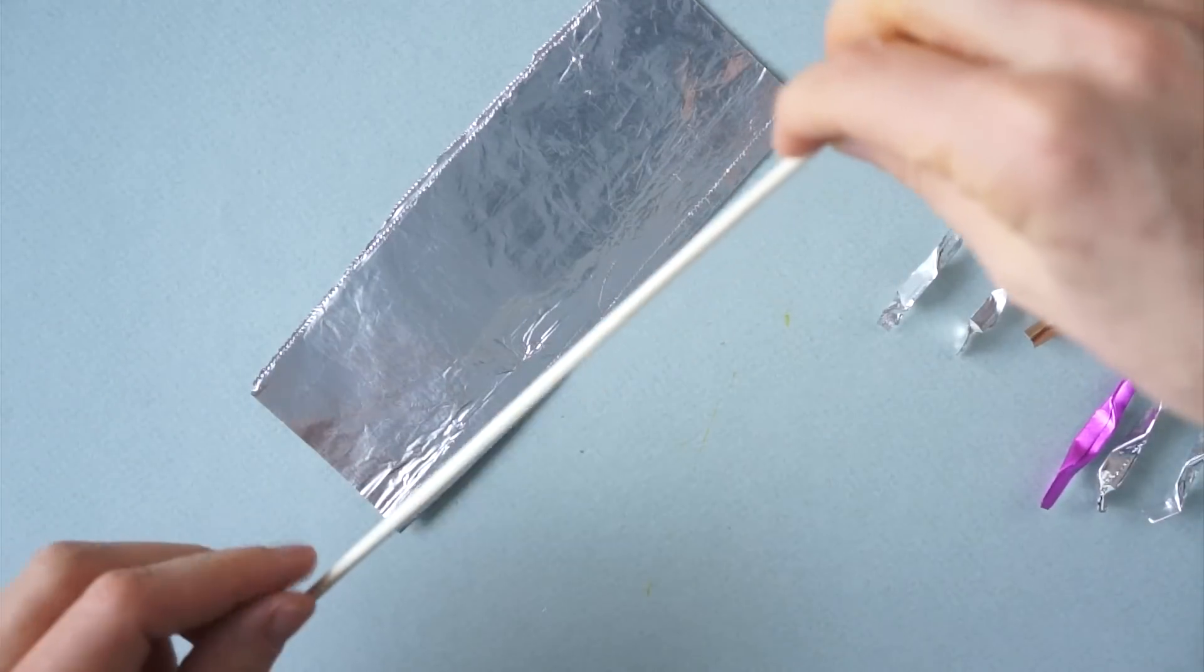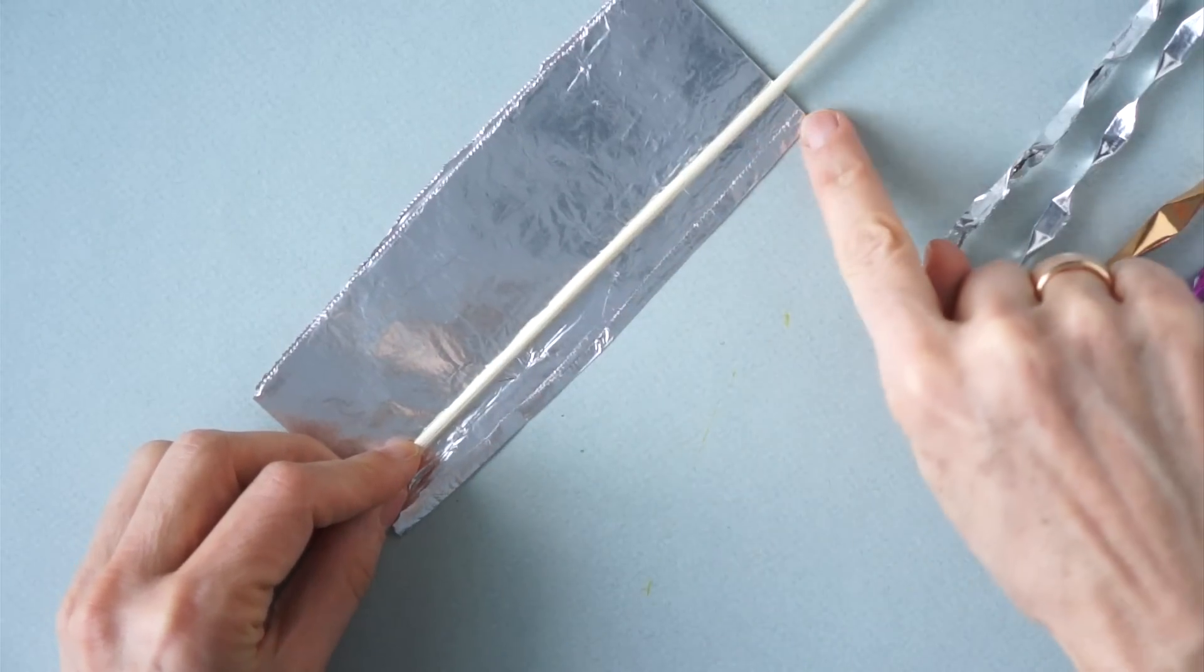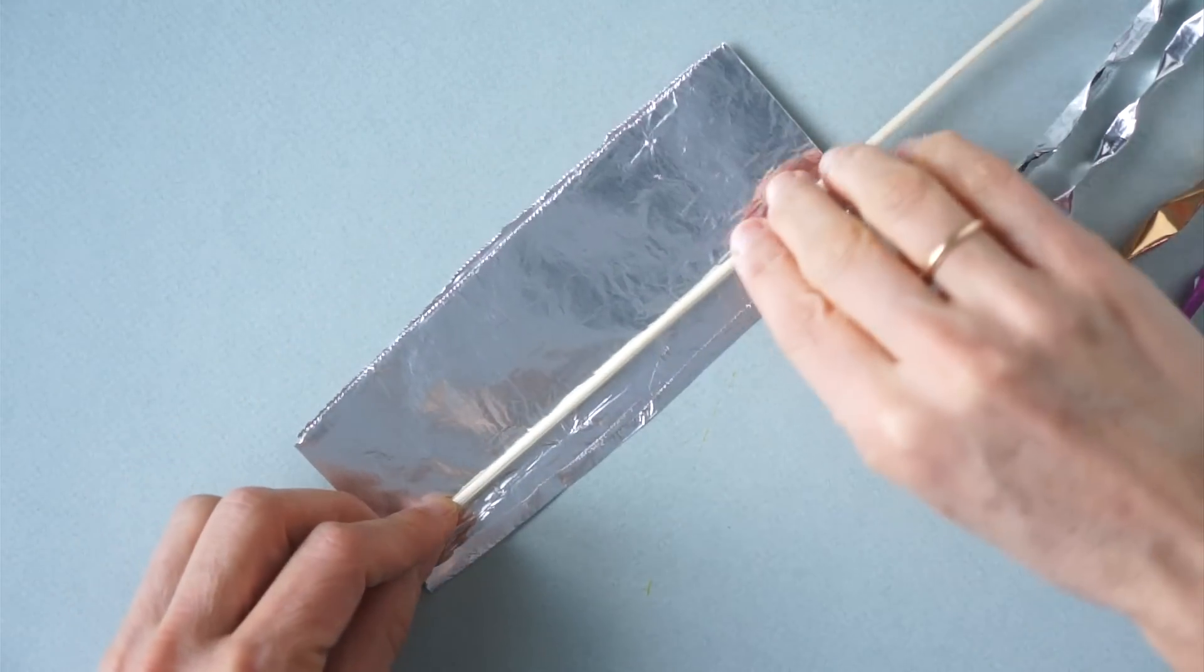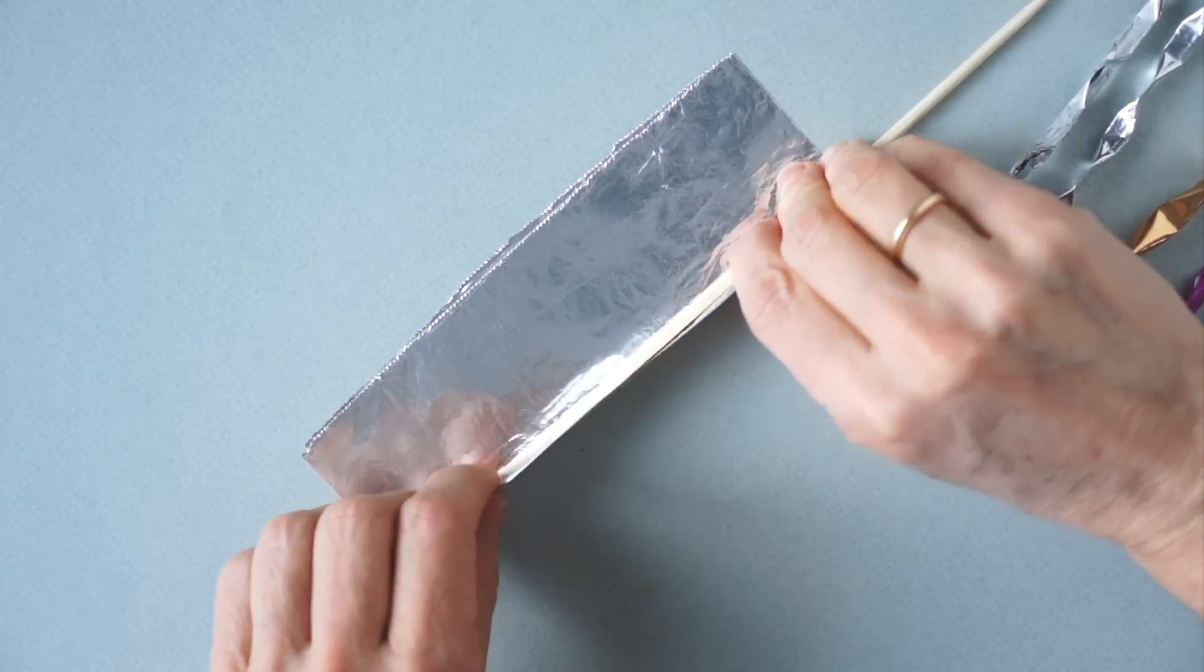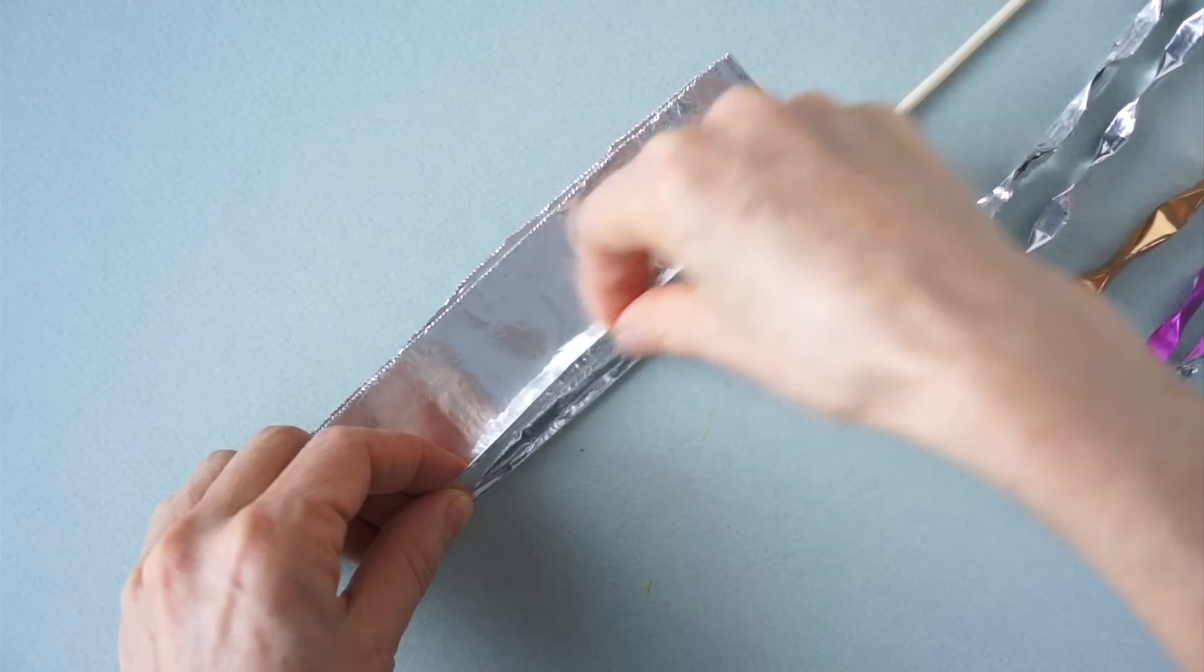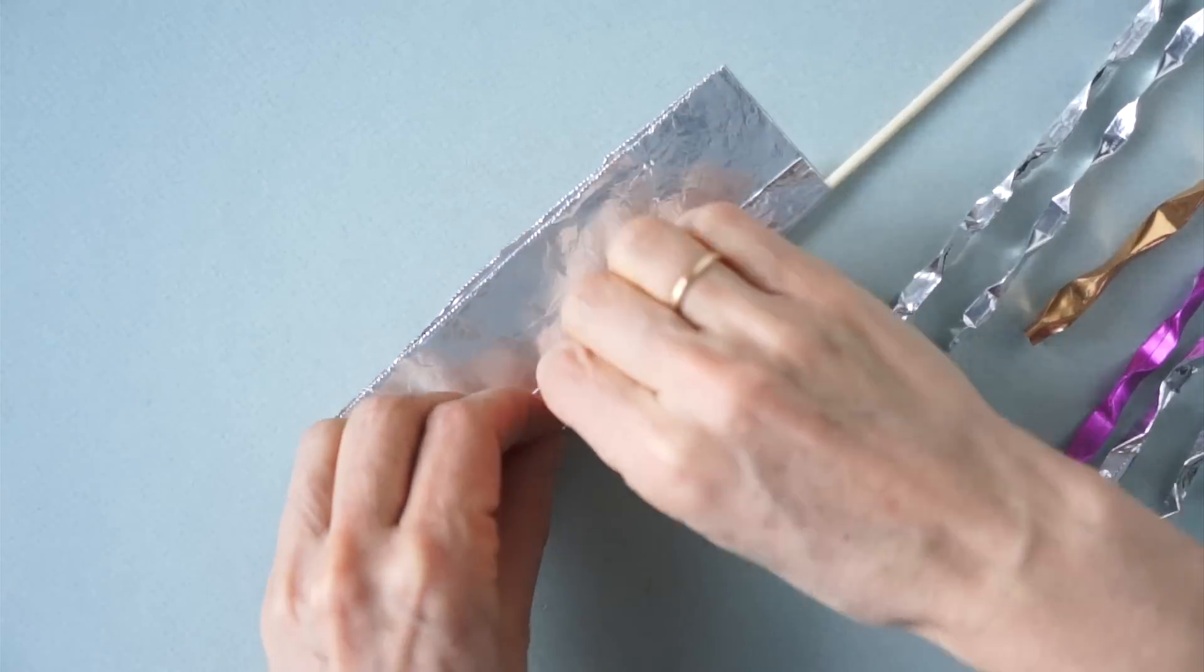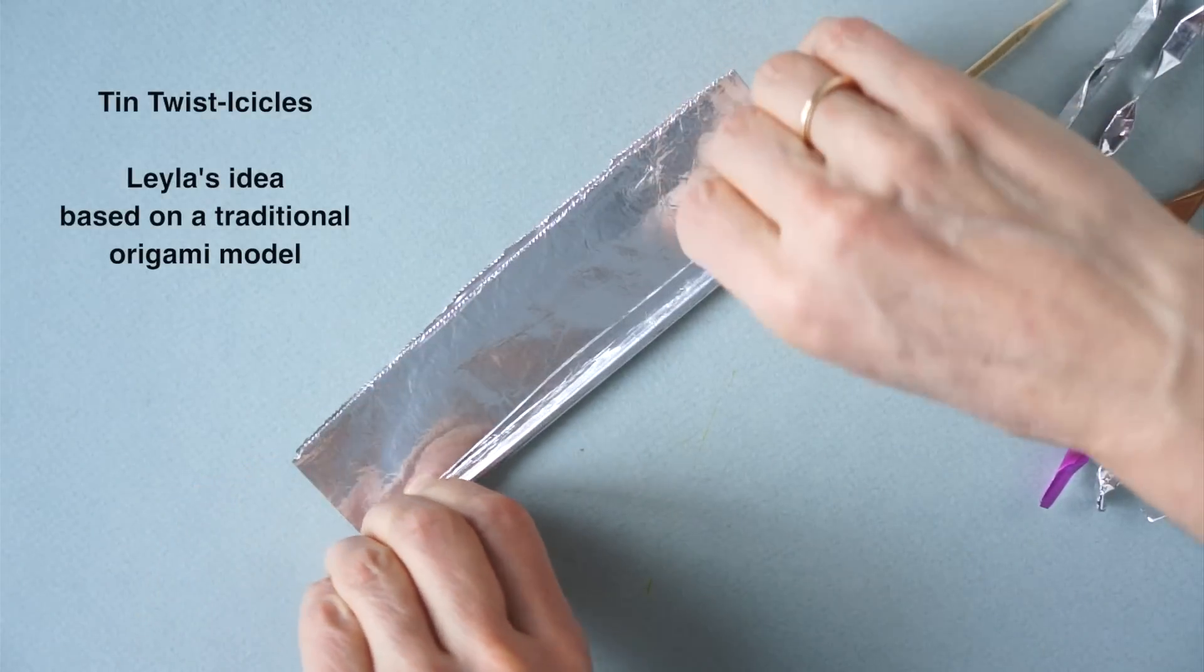So we're going to place a skewer near the edge. And we are going to wrap the paper over the skewer, leaving extra here. And then we roll all the way.